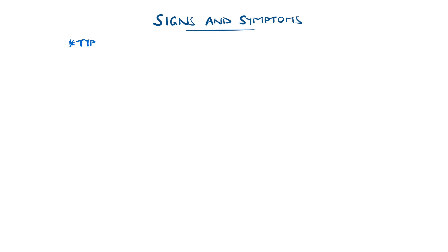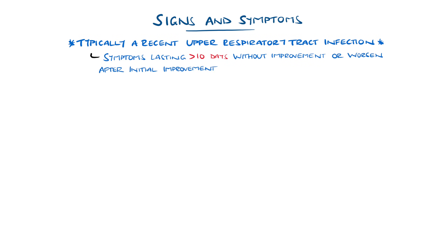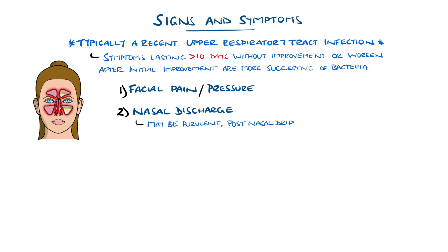Acute rhinosinusitis typically presents with a history of recent viral upper respiratory tract infection, and viral cases tend to peak earlier and gradually resolve. Duration of symptoms above 10 days without improvement is more suggestive of a bacterial infection, or if there is an initial improvement in symptoms followed by a deterioration, known as double sickening. Symptoms generally include facial pain or pressure, nasal discharge which can be purulent, or a sensation of a drip at the back of the throat, termed post-nasal drip.